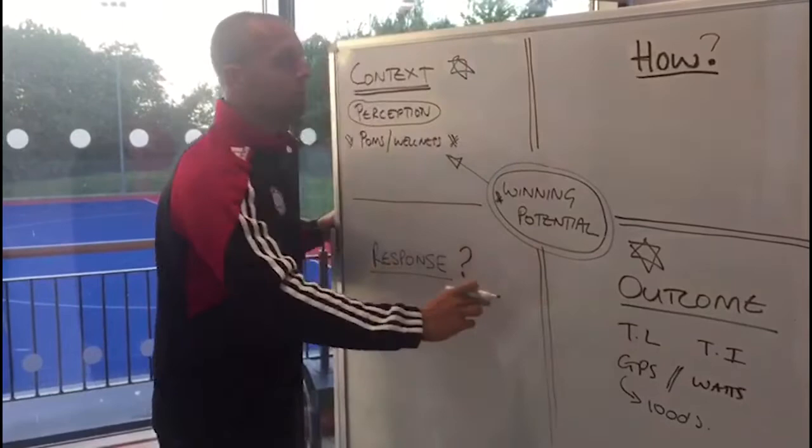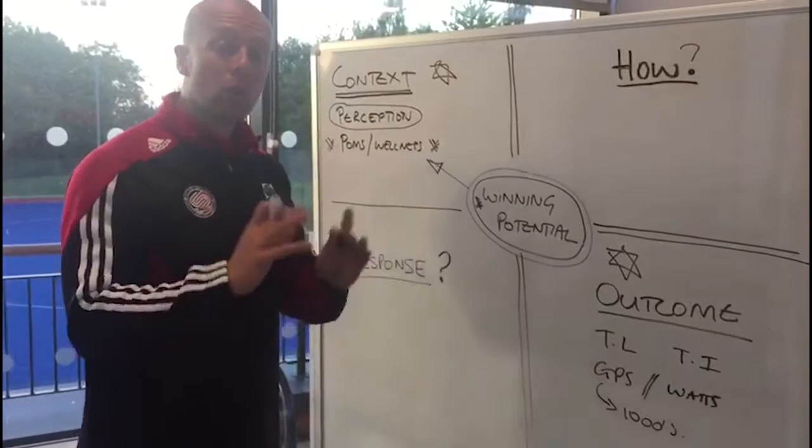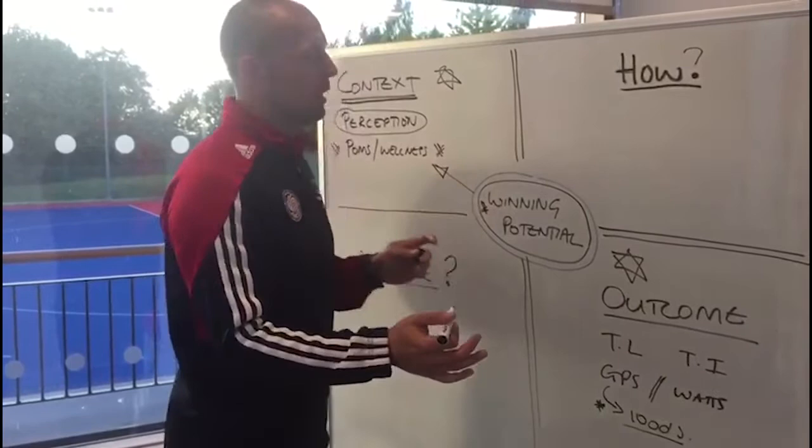We see-saw between these two monitoring methods: how do you feel today? Feel good — let's knock out a session. Next session: I feel tired, muscles are sore, but I'm good to go, so we hit them again. We see-saw between context and outcome most of the time. GPS gives you thousands of data points, but the law of diminishing returns means we get more and more data and less and less actionable outcomes.